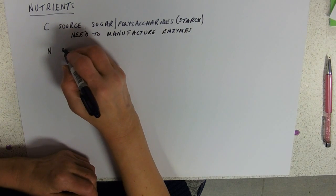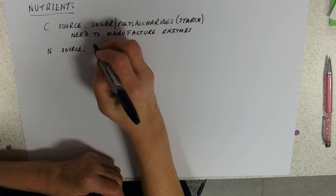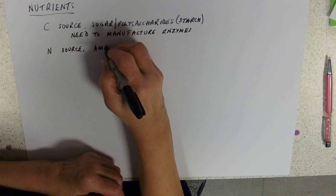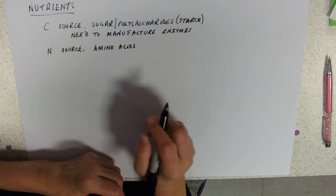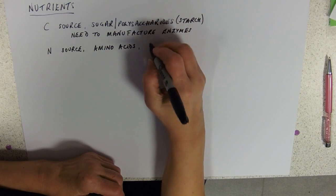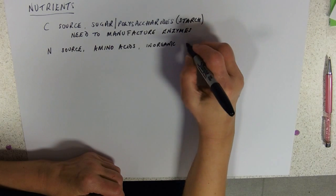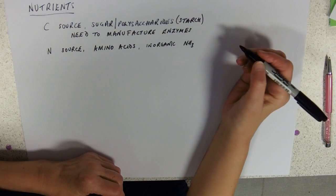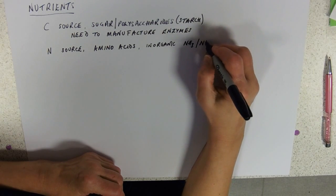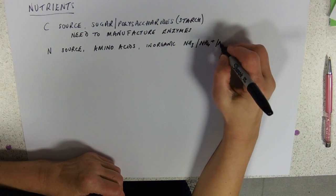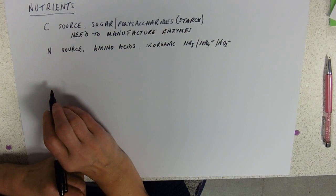They need a source of nitrogen just like we do. We get ours from amino acids by consuming protein, and certainly we could give microorganisms amino acids which they could utilize. But many of them can also use inorganic forms like ammonia. Quite often you could bubble that through a fermenter and the organisms would be quite happy using that. Ammonium salts and, of course, nitrates, so they might be able to use any of those depending on what sort of bacterium you've got.